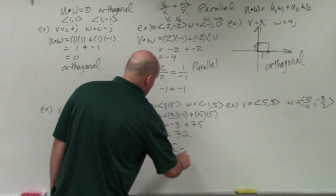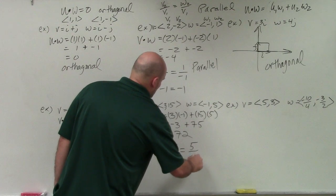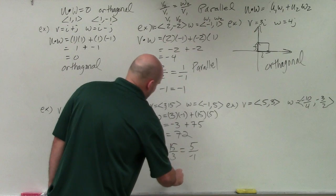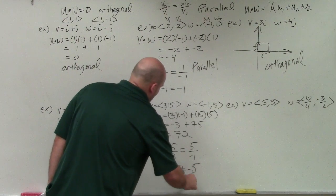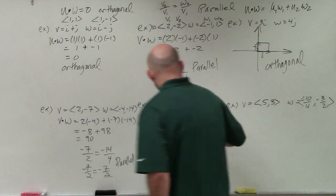Let's check parallelism. 15 over 3 is equal to 5 over negative 1. Well, 3 goes into 15 five times. That's equal to negative 5. So therefore, they're not equal. So this is neither.